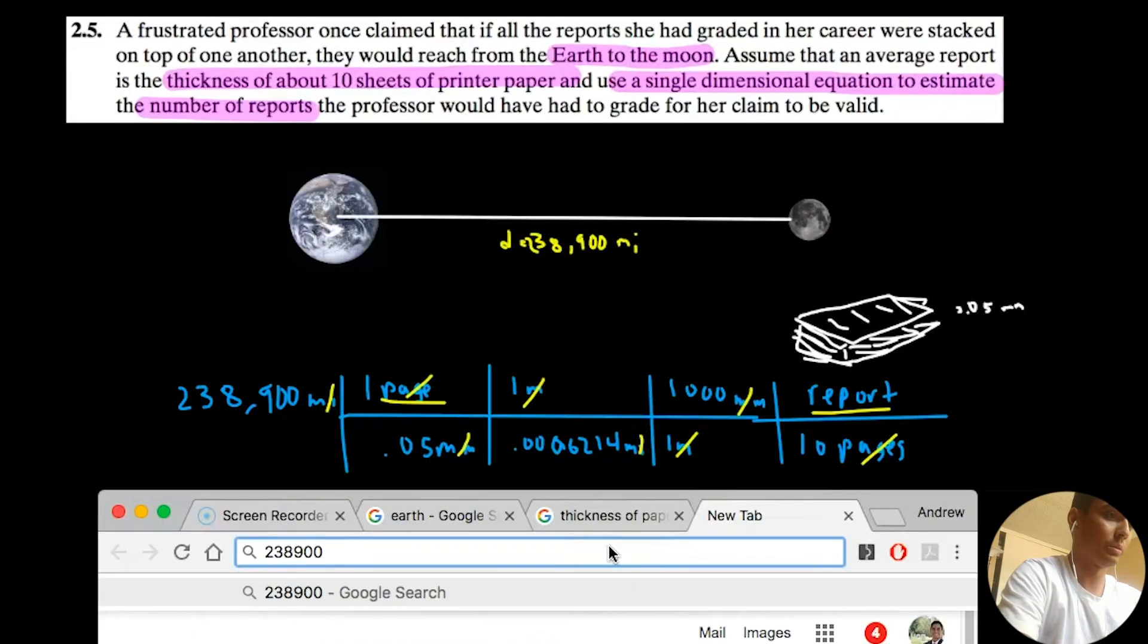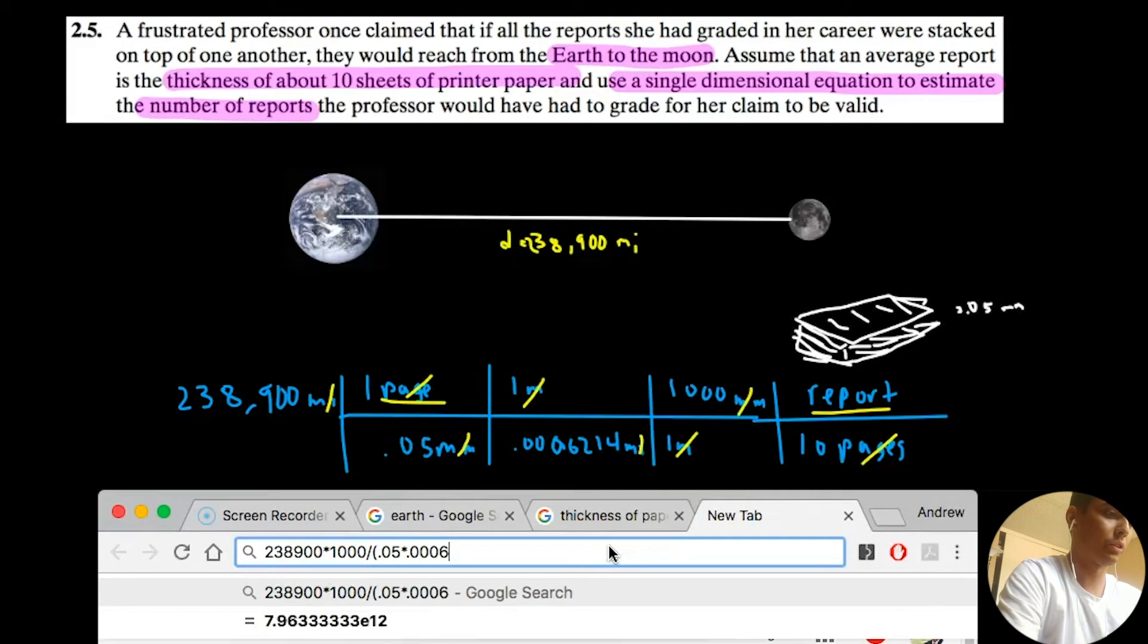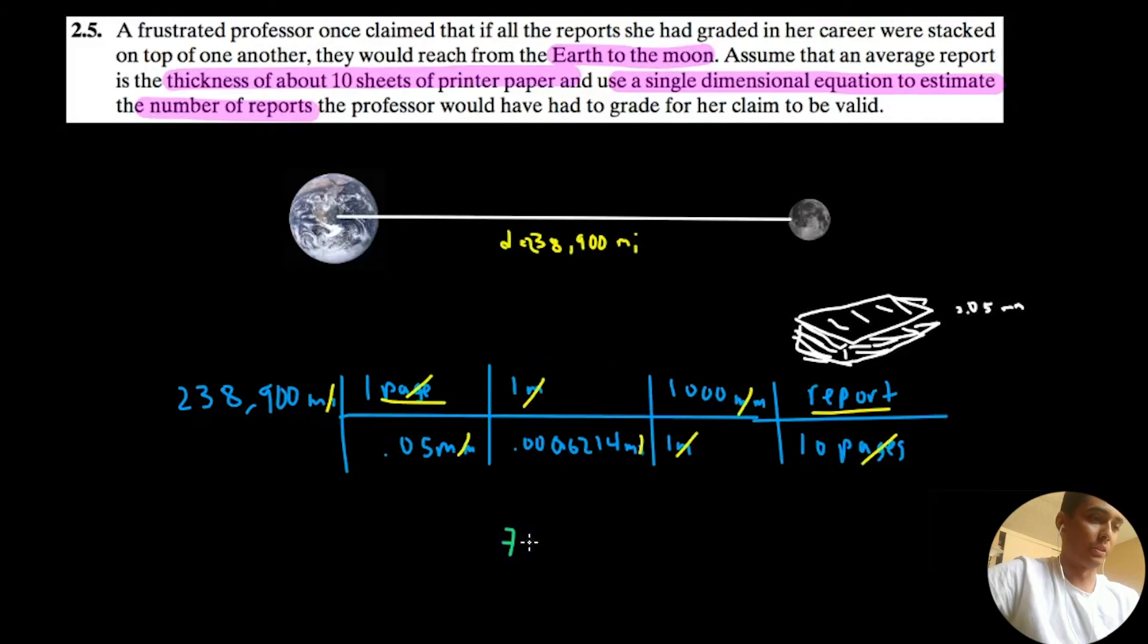238,900 times 1,000 divided by 0.05 times 0.00062 times 10 equals 7 times 10 to the 11 reports.